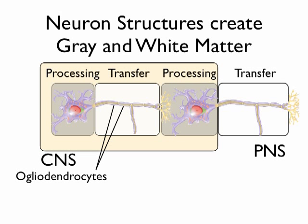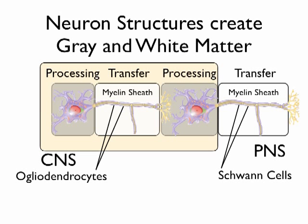In the peripheral nervous system, the insulator cells are Schwann cells. Both oligodendrocytes and Schwann cells are doing the same thing — one inside the central nervous system and one in the peripheral nervous system. These insulator cells produce a material called myelin. Sometimes this insulation is called the myelin sheath. Myelin is a lipid-type substance, about 80% lipid, which is fat.